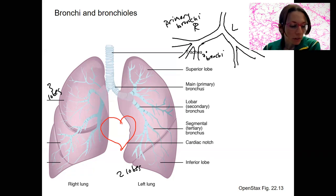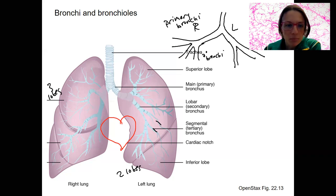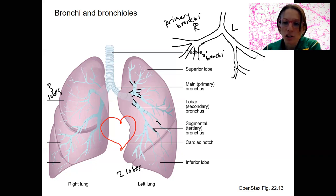Secondary bronchi are going to further divide into tertiary bronchi. You can see that here as well — here are the tertiary bronchi at this level where there's a whole bunch. Here are the two secondary, and here is a whole bunch of tertiary branching on both sides.